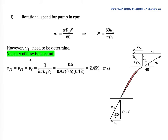Since the flow velocity is constant, Vf1 = Vf2, so we simply call it Vf. Vf is calculated using Q / (K·π·d·B). It is easier to use the parameters at point 2. Substituting all values with K = 0.9, we get Vf = 2.459 m/s.